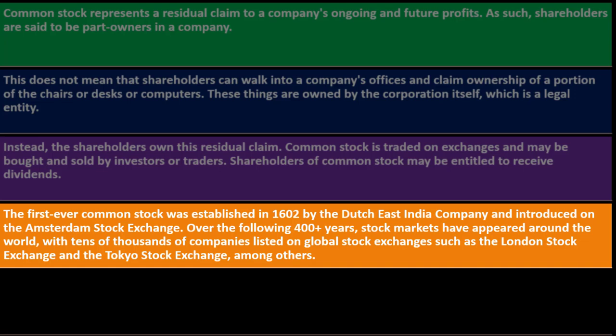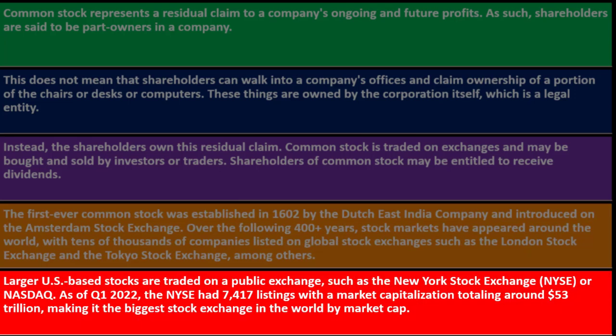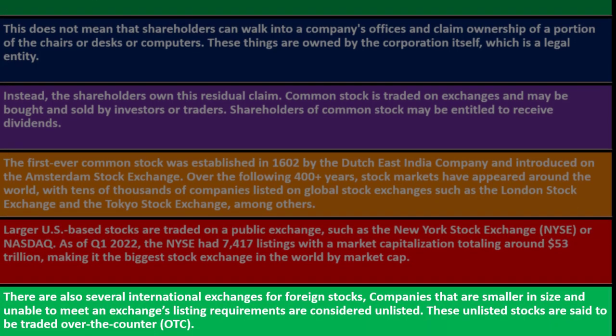The first ever common stock was established in 1602 by the Dutch East India Company, introduced on the Amsterdam Stock Exchange. Over the following 400-plus years, stock markets have appeared around the world with tens of thousands of companies listed on global exchanges such as the London Stock Exchange and the Tokyo Stock Exchange. As of Q1 2022, the New York Stock Exchange had 7,417 listings with a market capitalization totaling around $53 trillion, making it the biggest stock exchange in the world by market cap.